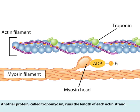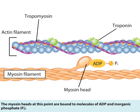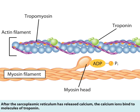Another protein, called tropomyosin, runs the length of each actin strand. The myosin heads at this point are bound to molecules of ADP and inorganic phosphate.